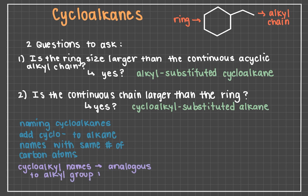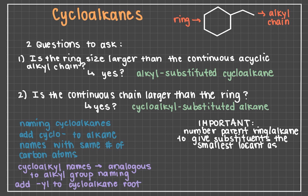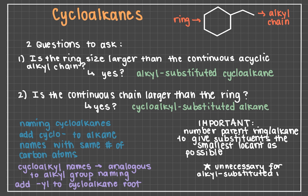Cycloalkyl substituents are named the same way that alkyl substituents are — take the analogous cycloalkane and drop the "-ane" suffix, adding "-yl". Again, it's important to number the parent ring or the alkane accordingly so that the substituents have the smallest locants possible. For an alkyl-substituted ring, you must give the position of each substituent if there is more than one. However, if only one is present, it is unnecessary to give a locant because the position is unambiguous.